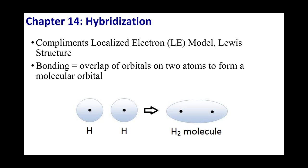In the last chapter, we talked about Lewis dot structures. This is called the LE model, or the localized electron model. The idea is that we form bonds, and the electrons are going to be in these static positions between the two nuclei in the bonds themselves. Now we're going to put that on the back burner and talk about another kind of theory.